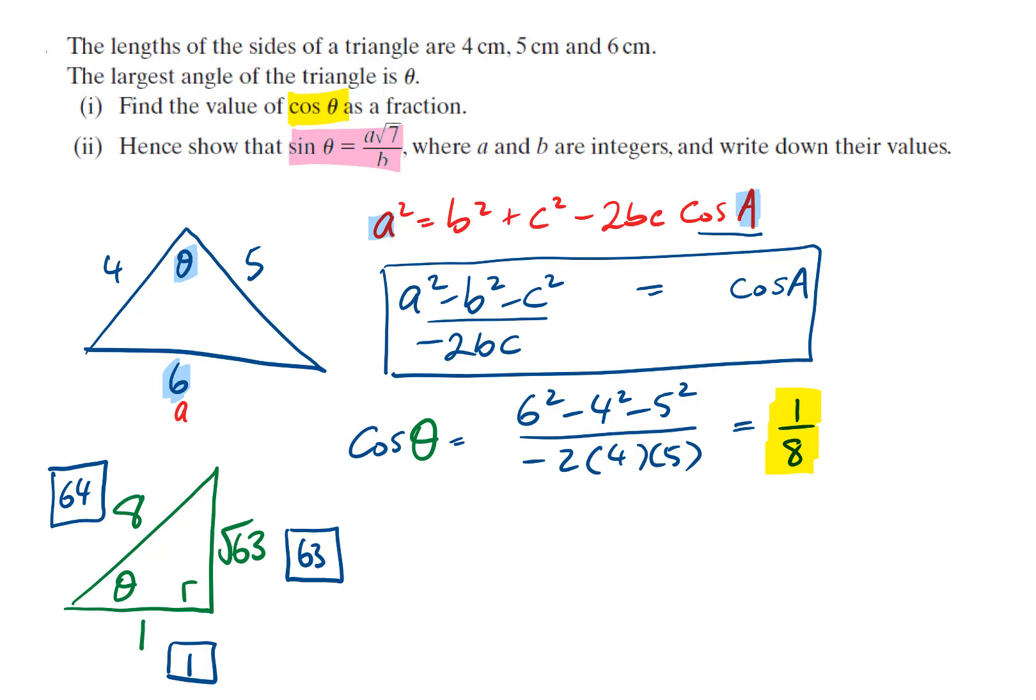The square root of 63 is, 63 is 9 times 7. The square root of 9 is 3. So I could write this as 3 times the square root of 7. Sine is opposite over hypotenuse. So sine of the angle theta, the ratio for this question is 3 root 7 over hypotenuse, which is over 8. So I've worked out the sine ratio.